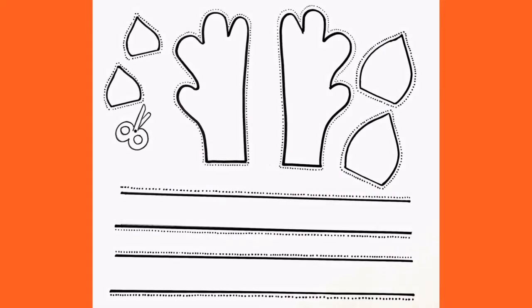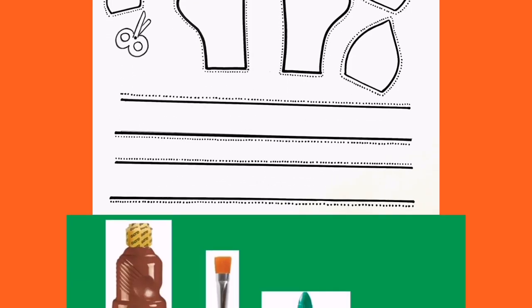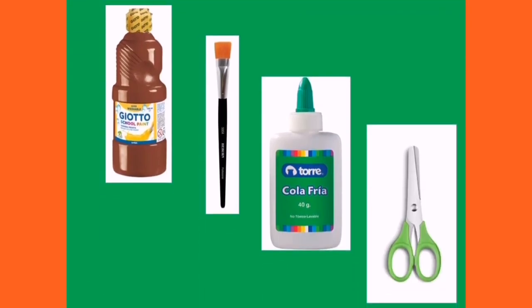First we're going to check all the supplies to do this activity. We will need the worksheet with the templates of our headband. Also we are going to use brown paint, a paintbrush, some scissors and glue.